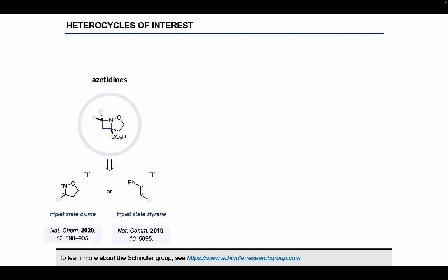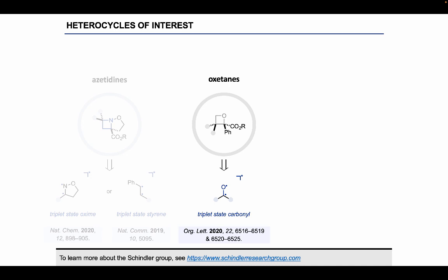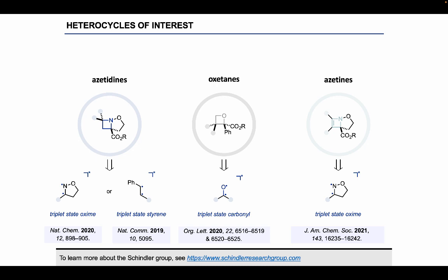Our lab has been interested in this for a number of years, and we first started with the synthesis of azetidines through two different approaches: harnessing triplet state cyclic oximes and the corresponding excited state alkenes like styrenes and dienes. Additionally, we've done work in the area of the Paterno-Büchi reaction, where we've been able to use triplet energy transfer sensitization to access triplet state carbonyls that then react to form oxetanes. Finally, we've looked at the unsaturated analog of an azetidine, an azetine, where we've been able to take those cyclic triplet state oximes and react them with alkynes instead of alkenes.